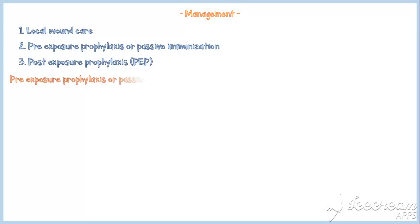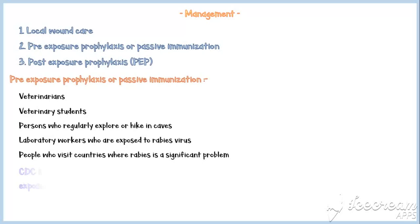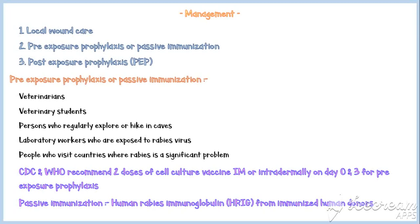Pre-exposure prophylaxis or passive immunization is given before contact with a rabid animal for people who are at risk, such as veterinarians, veterinary students, persons who regularly explore or hike in caves, laboratory workers exposed to rabies virus through handling of specimens, and people who visit countries where rabies is a significant problem. CDC and WHO recommend two doses of cell culture vaccine intramuscularly or intradermally on day 0 and 3 for pre-exposure prophylaxis. For passive immunization, human rabies immunoglobulin can be administered.